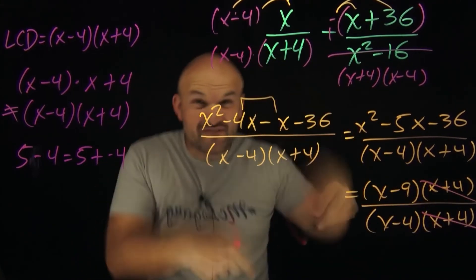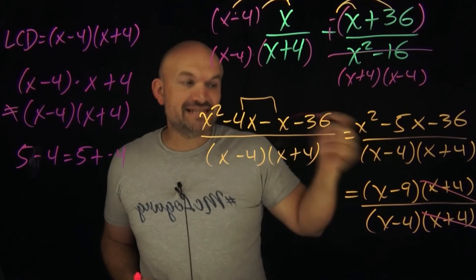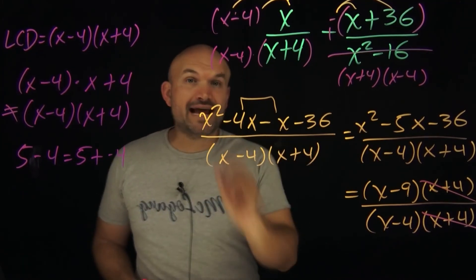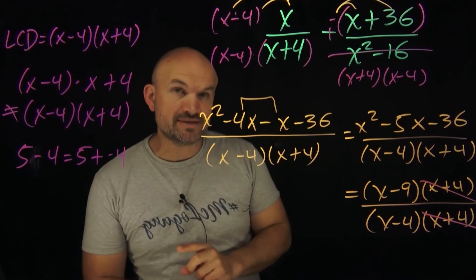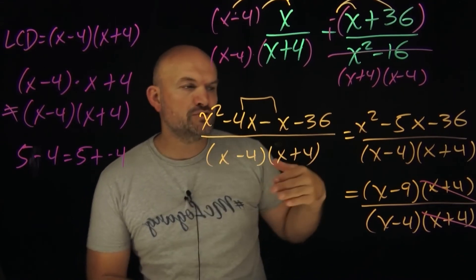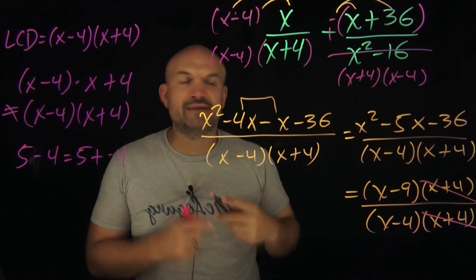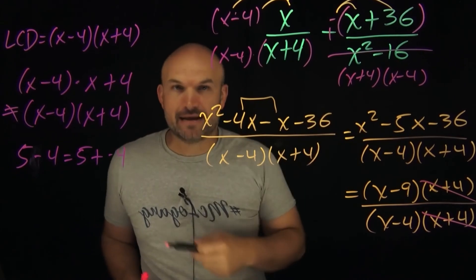So now we're going to be left with this final answer of x minus 9 divided by x minus 4, and we're still going to have our excluded values, right? Our excluded values, which are going to be x cannot equal plus or minus 4, because that's going to make your denominator equal to 0.